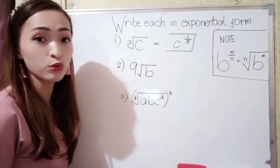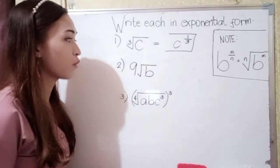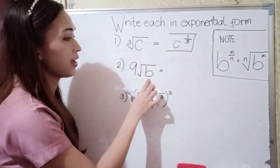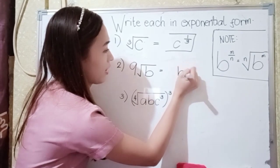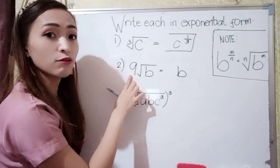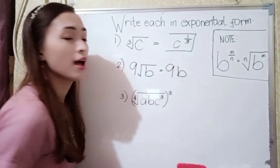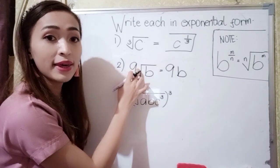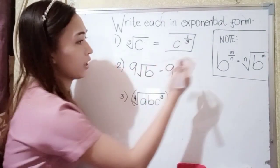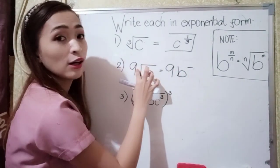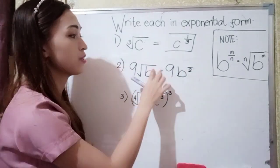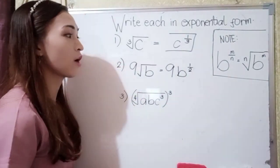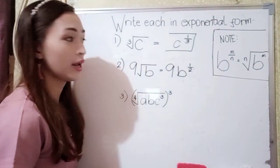For number 2, we have 9 times the square root of b. Our base is our radicand, which is b, and we write 9 outside. Since this is the square root, the index is automatically 2, making it our denominator. Since we have no exponent, the numerator is automatically 1. So our answer for number 2 is 9b raised to 1 half.